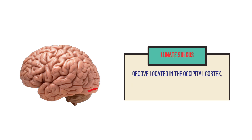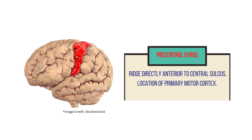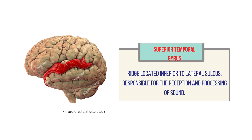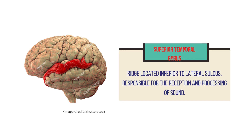The lunate sulcus is a groove located in the occipital cortex. The precentral gyrus is a ridge directly anterior to the central sulcus and is the location of the primary motor cortex. The postcentral gyrus is a ridge directly posterior to the central sulcus and is the location of the primary somatosensory cortex. The superior temporal gyrus is a ridge located inferior to the lateral sulcus, responsible for the reception and processing of sound.